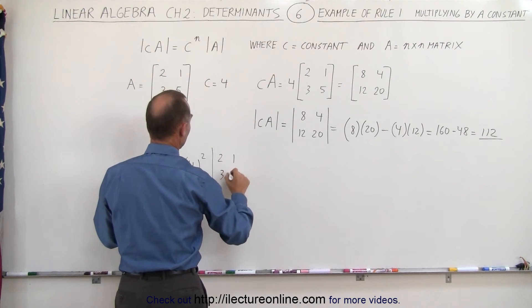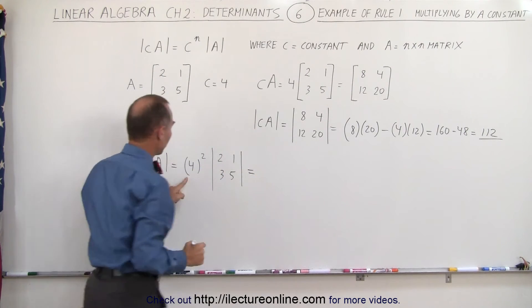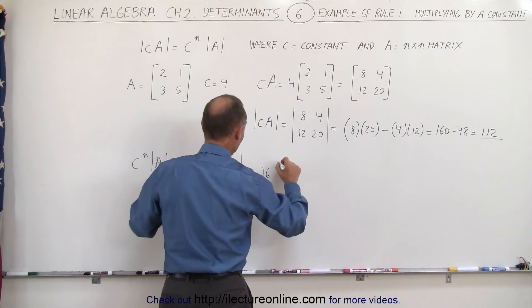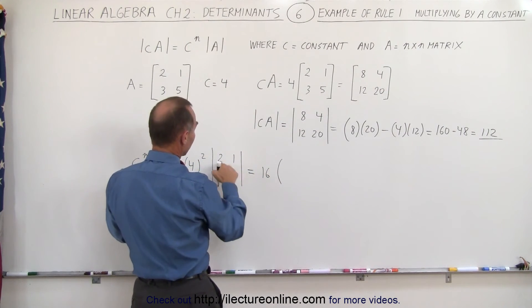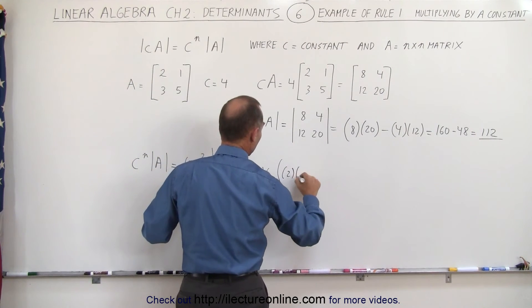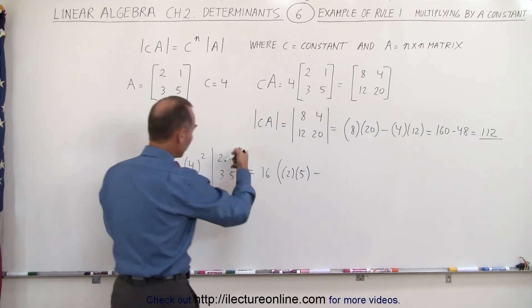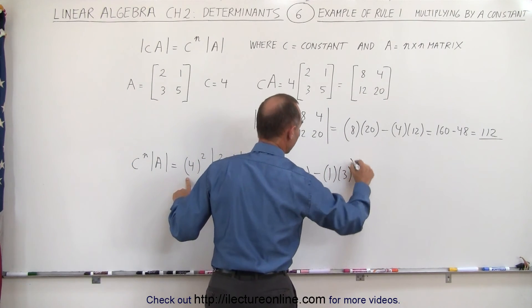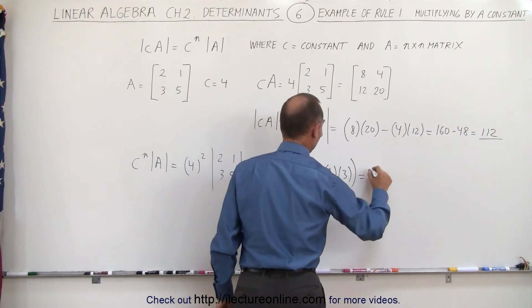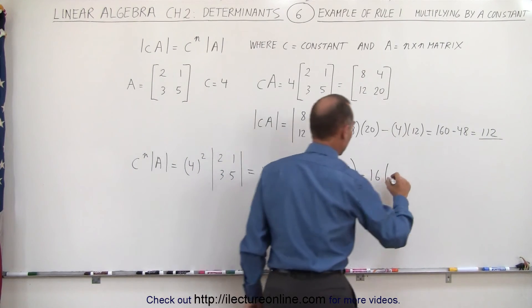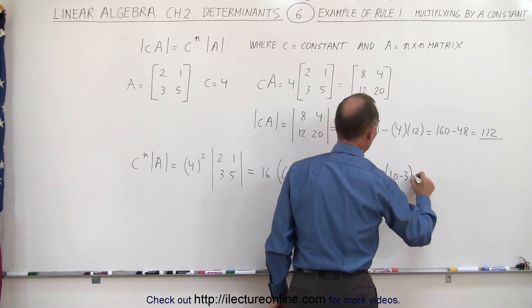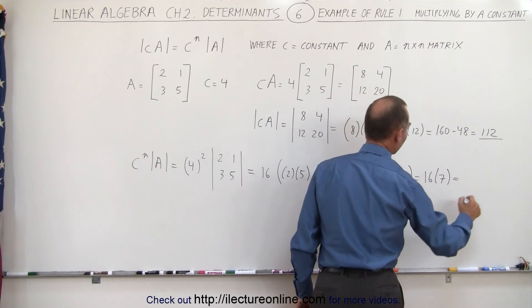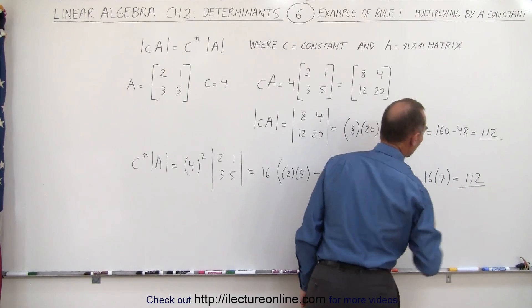Which is 2, 1, 3, and 5. So this would be equal to 16 times, we multiply the diagonals together, 2 times 5 minus multiplying those diagonals together, 1 times 3. Therefore, this becomes equal to 16 times 10 minus 3, 10 minus 3, which is equal to 16 times 7, which sure enough is also equal to 112.